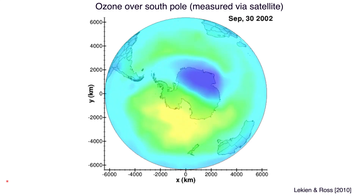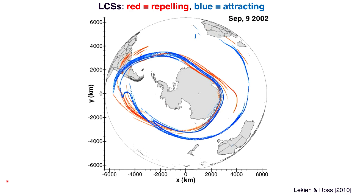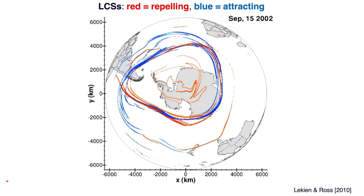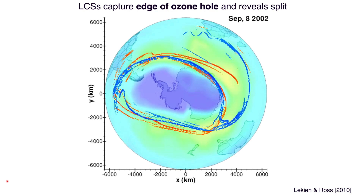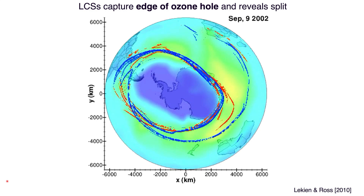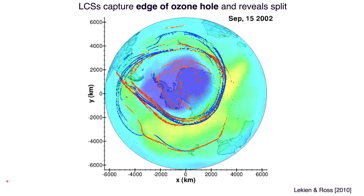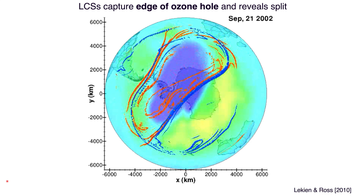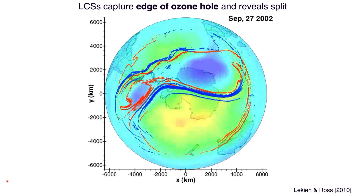If we compare this with the computation of attracting and repelling curves high in the stratosphere, we get a structure that looks like it's providing the boundary of the vortex, and something interesting is happening in the middle where we see a splitting event. If we overlay these two, we see that the LCS seem to capture the edge of the ozone hole and also reveal the split. We have a lot more going on than just a boundary — we can actually see filamentation in and out of the boundary, but the main feature here is capturing the splitting.